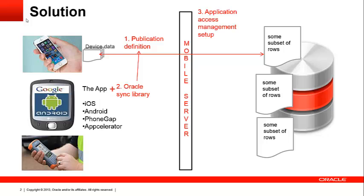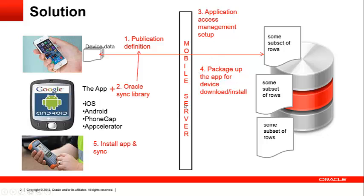We will need to set up access management so that the data is provisioned specifically per each device user. Then the application developed in step 2 can be packaged and deployed on the mobile server. Once the application is packaged on the mobile server or on any external app store, it can be downloaded and installed on the device.